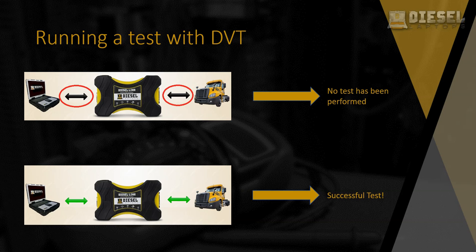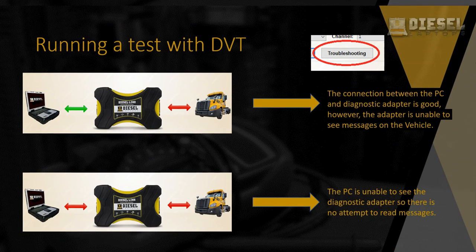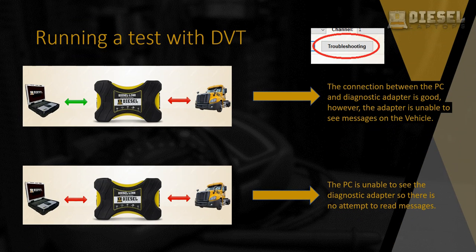Next we will see what it's like when we run a test and it doesn't come back successful. In the case you run a test with the DVT and it doesn't come back successful, you can then go into troubleshooting steps appropriate to your test results. Here we see two examples in which we would need to go into our troubleshooting steps. In the first example, we have good communication from the adapter to the PC, however we are not reading any messages on the vehicle. In our second example, we do not have a good connection between our adapter and our PC, so there is no attempt to read messages on the vehicle. At this point we can go through our troubleshooting steps and make any necessary adjustments. Once we've done that, we can run another test to verify our changes worked. If the test comes back successful, we can then use our diagnostic software and ensure proper communication.